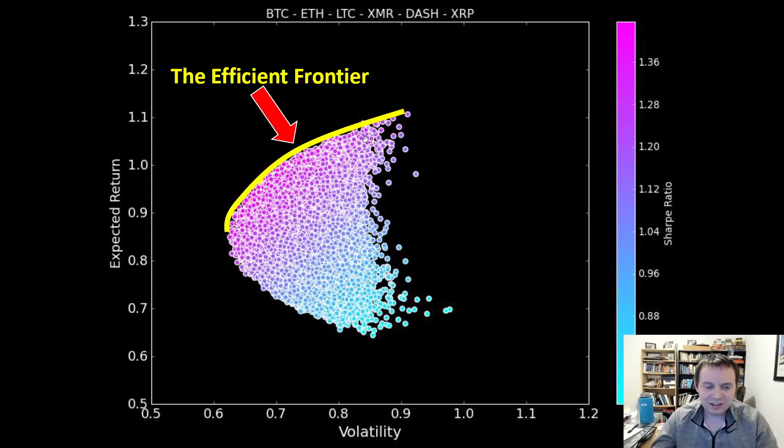This curve right here is known as the efficient frontier. That means that for a given volatility there exists a single portfolio which maximizes your risk adjusted returns or maximizes your Sharpe ratio.